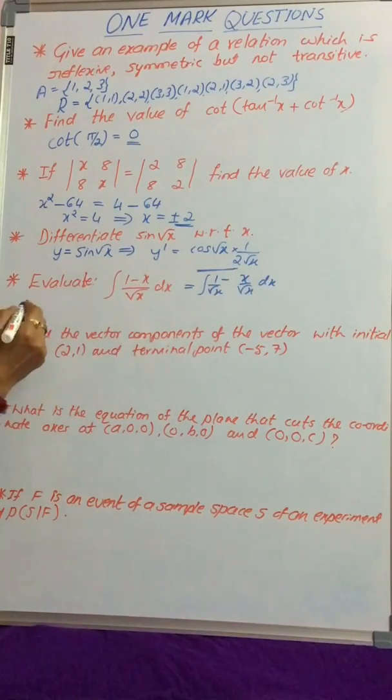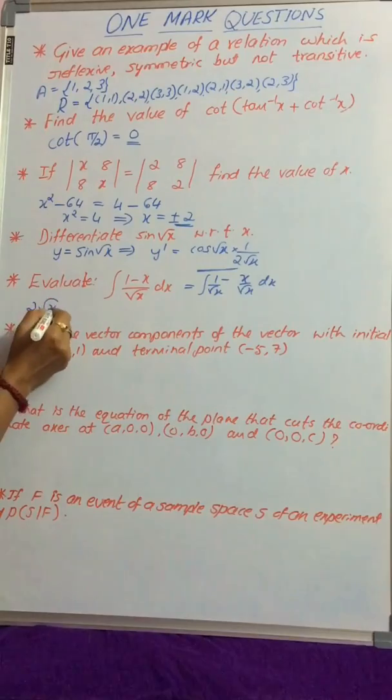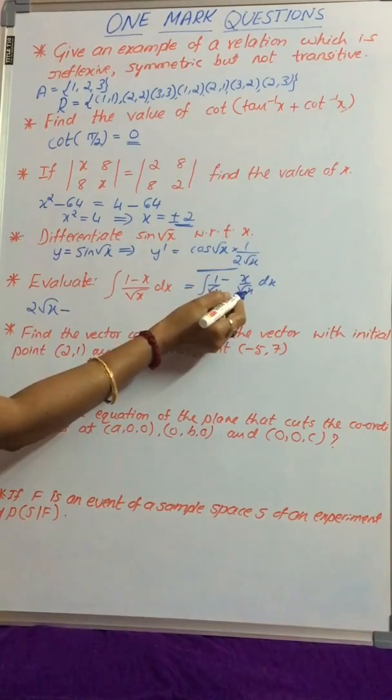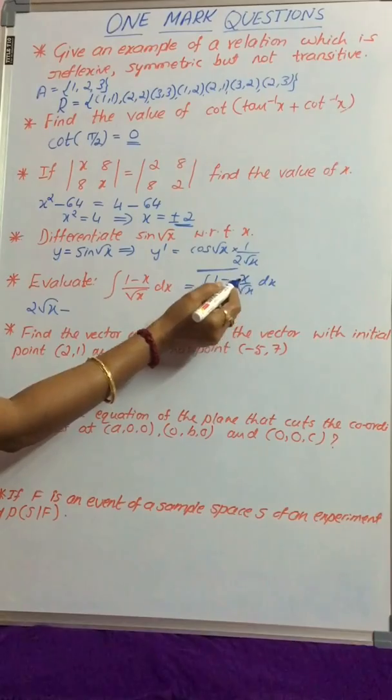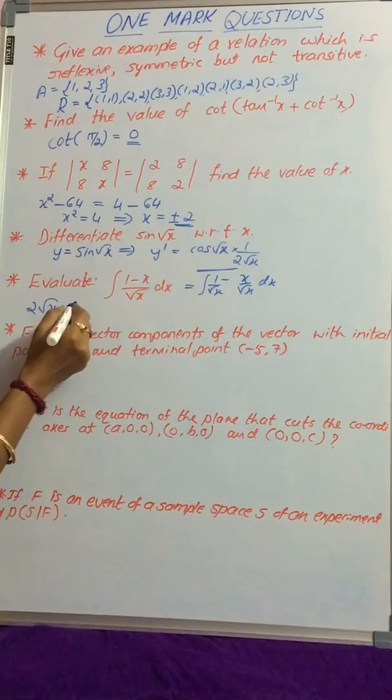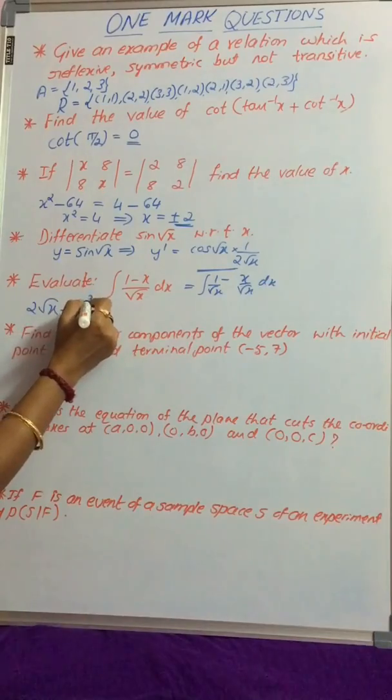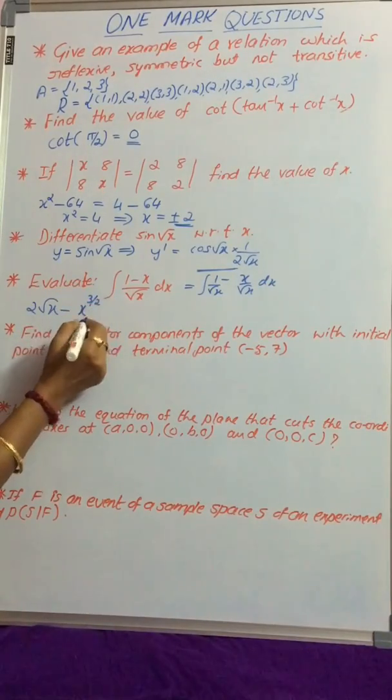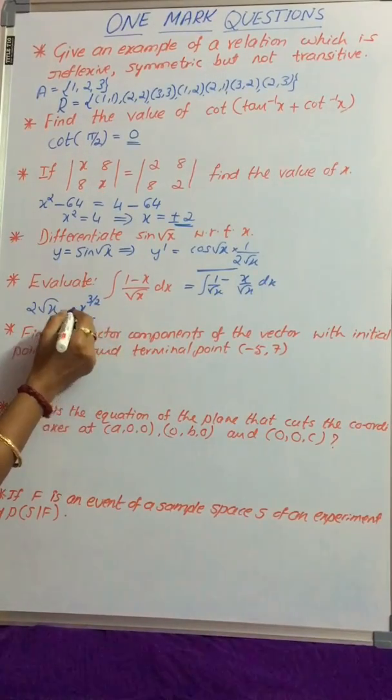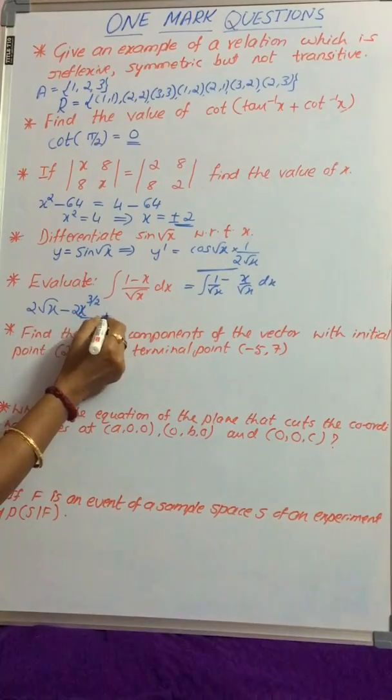The integral of 1/√x is 2√x minus, since x/√x can be written as √x, the integral of √x is x^(3/2) divided by 3/2, plus c.